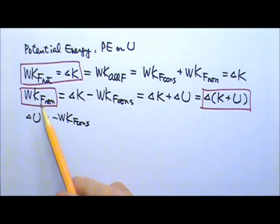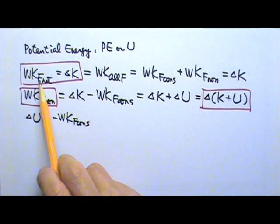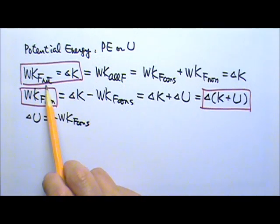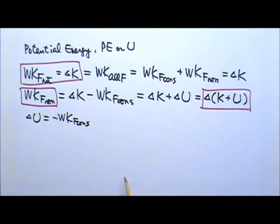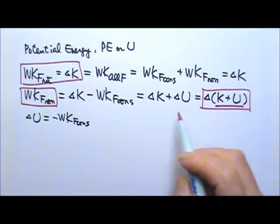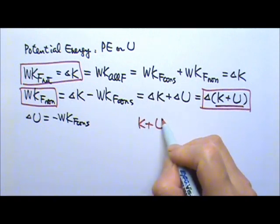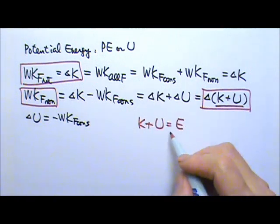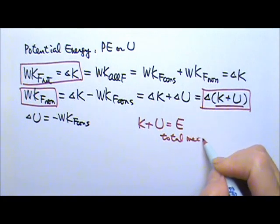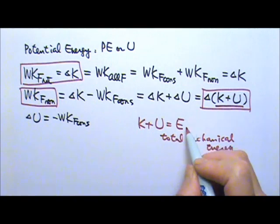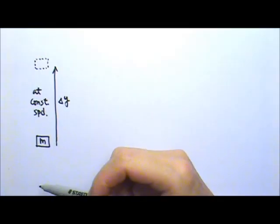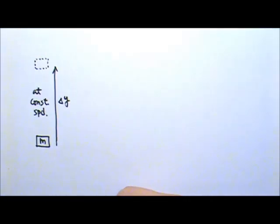For example, for gravity: in the old equation we consider the work done by gravitational force; in the new one we consider the gravitational potential energy. If we consider both in the same equation, we would be double-counting. We add the kinetic energy and the potential energy together and call it total mechanical energy, and we use capital E for it.